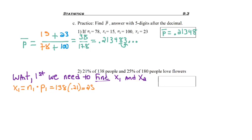So 138 people, sorry, a group of 138 people. 21% liked flowers, and so when we multiply those, we get 28.92. We know that we need to round this, and so we'll be using that X1 is 29.